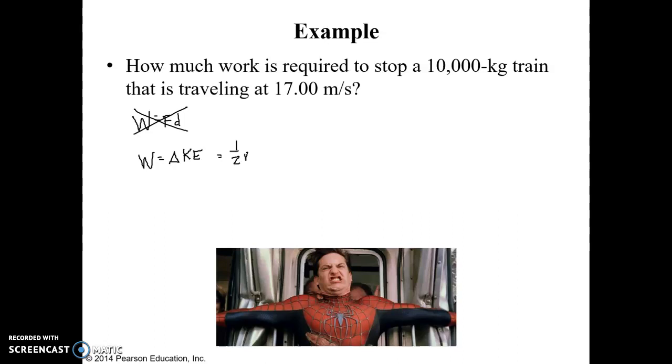So we have 1 half mv2 squared minus 1 half mv1 squared. So if we want to bring it to a stop, then that means that the final velocity is going to be 0.